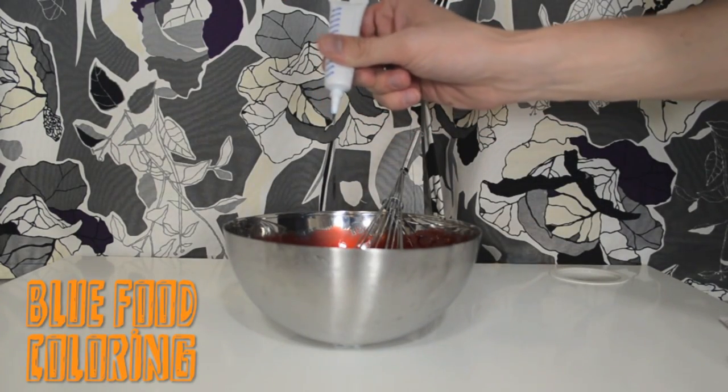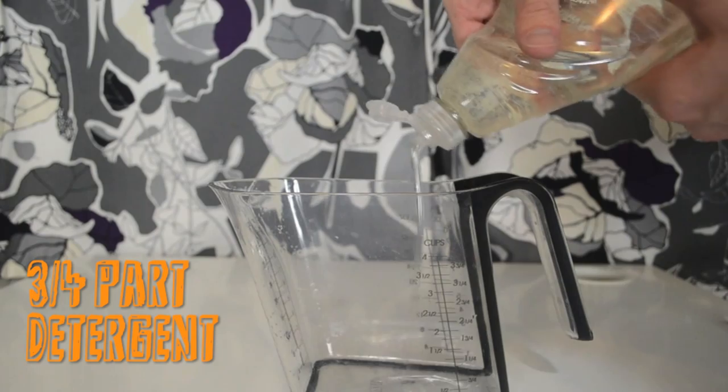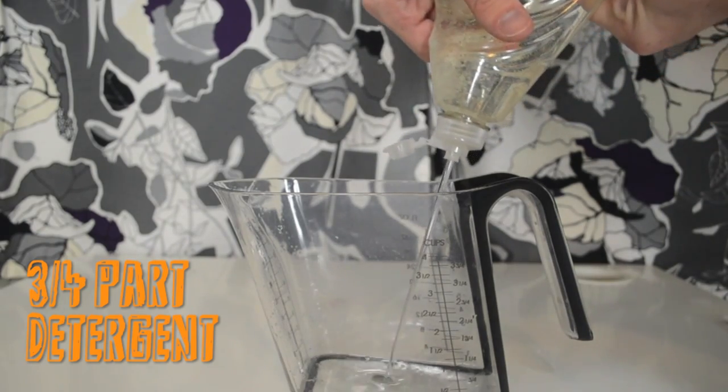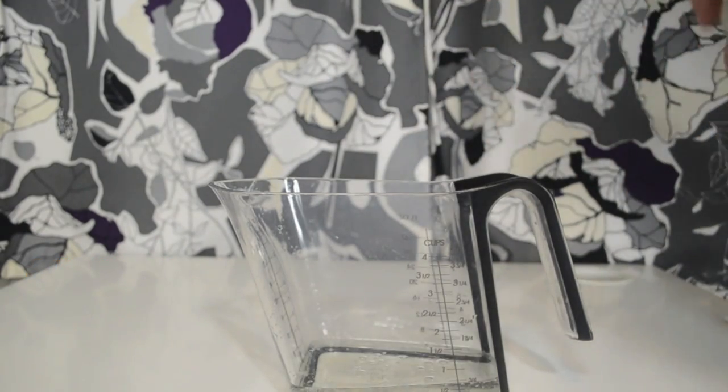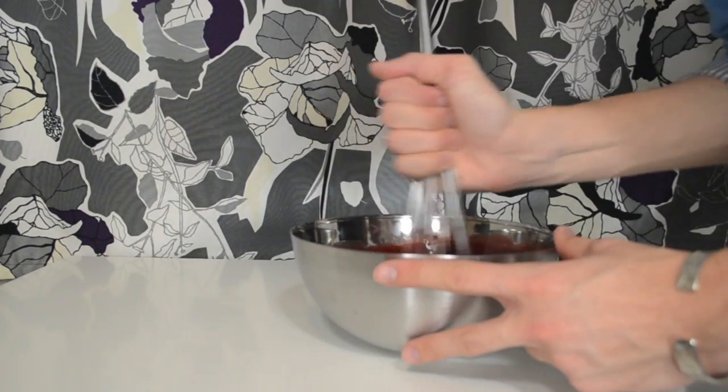Next add a little bit of blue food coloring to slightly offset the red. Finally add three-quarters part dish or laundry detergent. So for me that'll be three-fourths of a cup. Then add it to your mixture, mix it together, and you should be done.